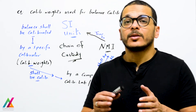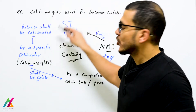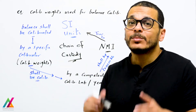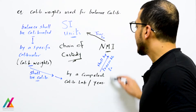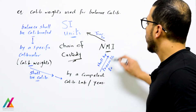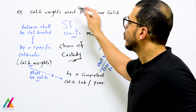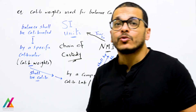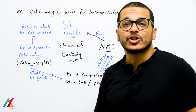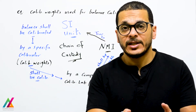As an example of traceability, consider calibrated weights used for calibration of a balance. The balance shall be calibrated using calibrated weights, and those calibrated weights shall also be calibrated — by a competent calibration lab, typically every year. That competent calibration lab shall be traceable to the national metrological institute inside the country, and that national metrological institute shall be traceable to SI units. This is the chain of custody ensuring comparability of calibration to the international system of units.